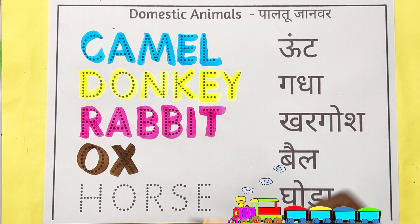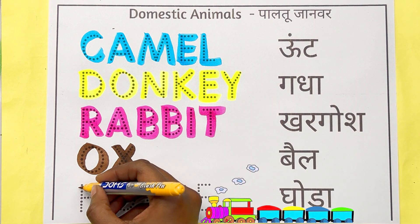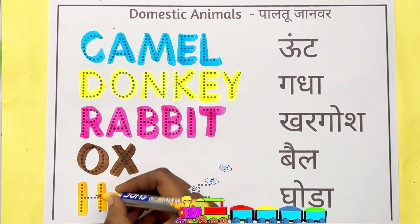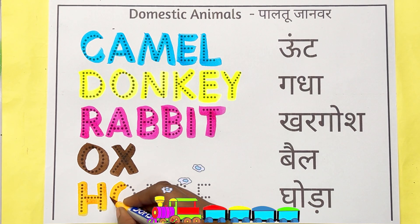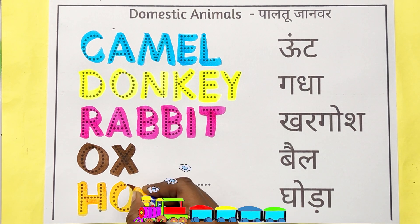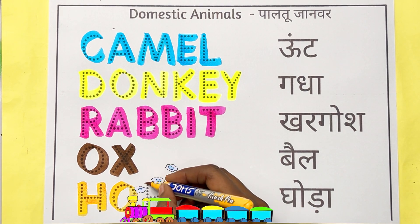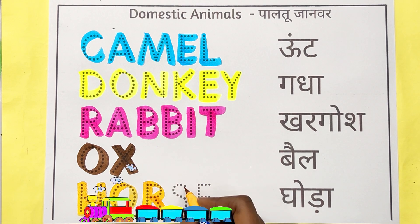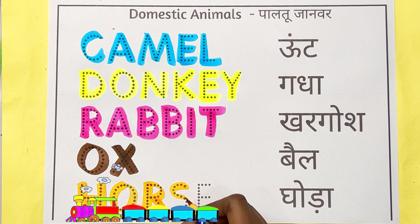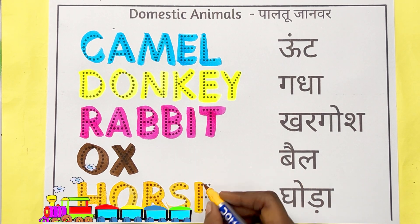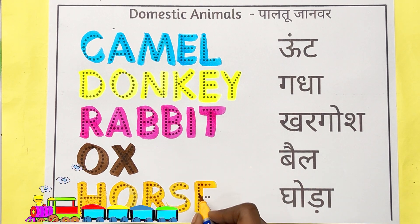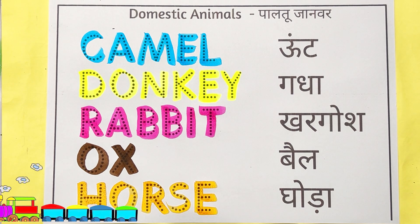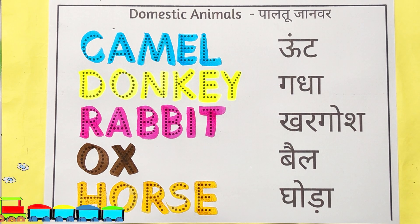Yellow color — horse. H, O, R, S, E. Horse means ghoda.